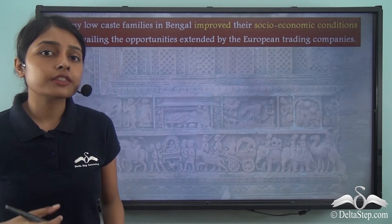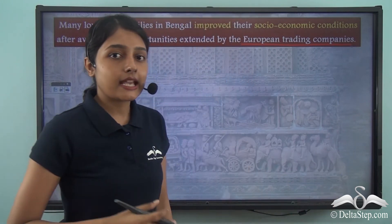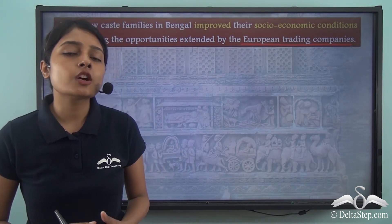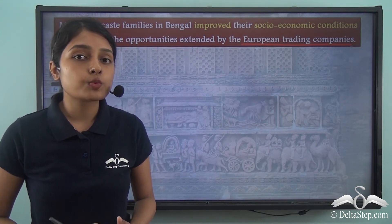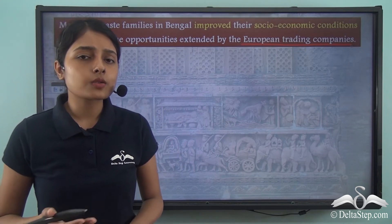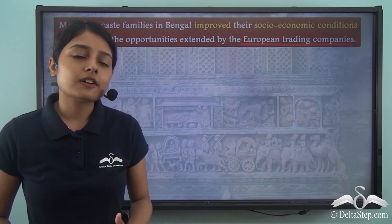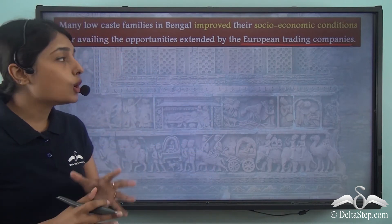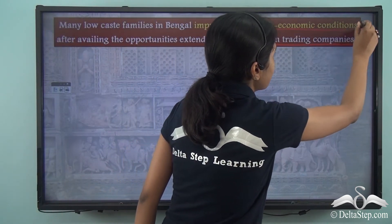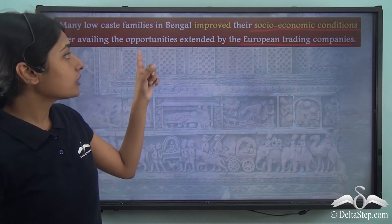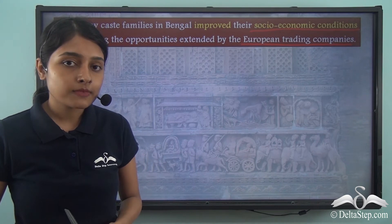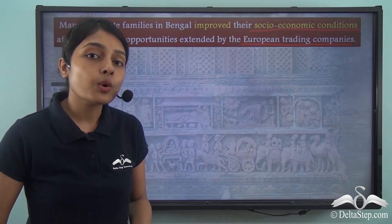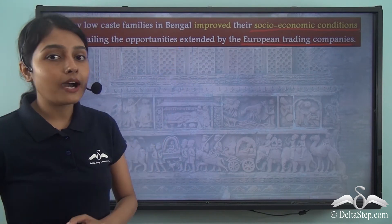This brings us to a discussion on the various European trading companies that entered the Indian subcontinent through the 17th and 18th centuries. Many of these European trading companies did not have proper awareness and knowledge of the caste system that was prevalent in the subcontinent. They did not know about the social division and hierarchization in terms of castes, which is why they extended their support and patronage liberally to all the people. In this regard, many lower caste families improved their socio-economic conditions by availing opportunities extended by the European trading companies. So these lower caste families that initially did not have any access to wealth or resources now slowly started growing and developing with the help extended by the European trading companies.